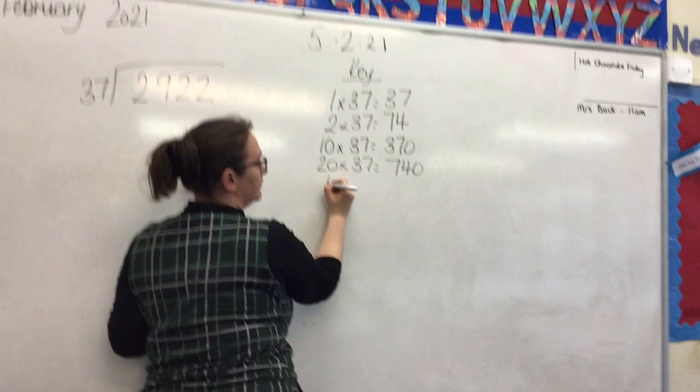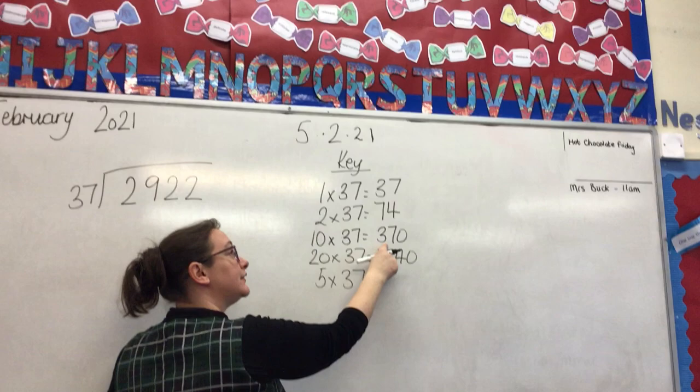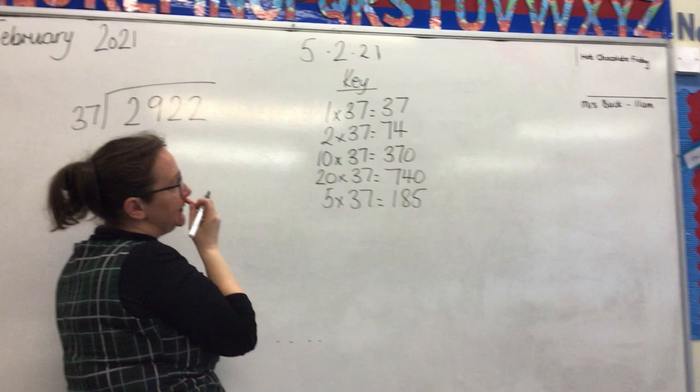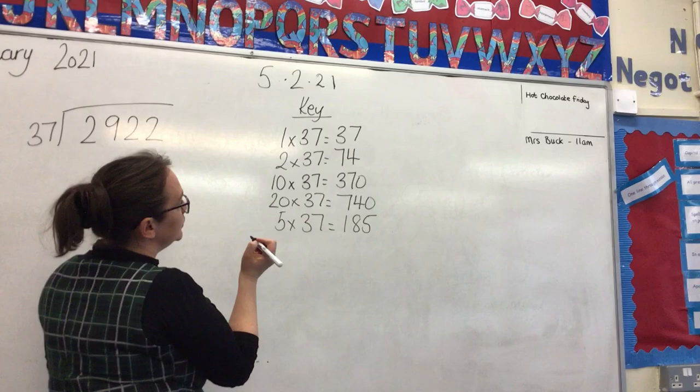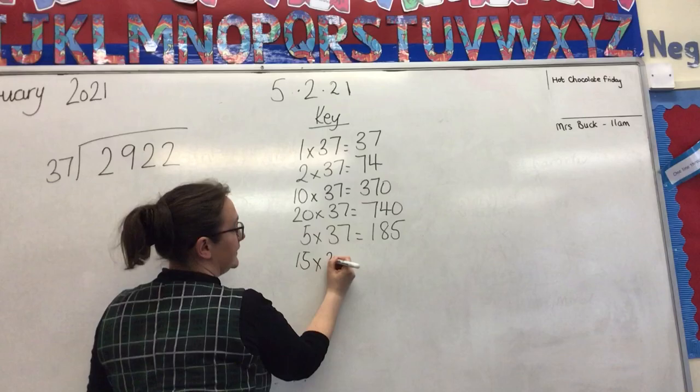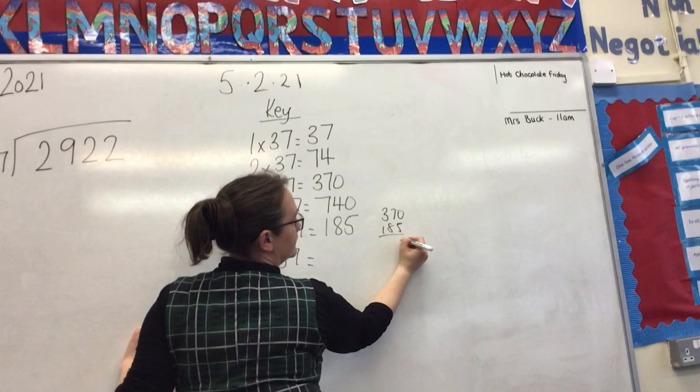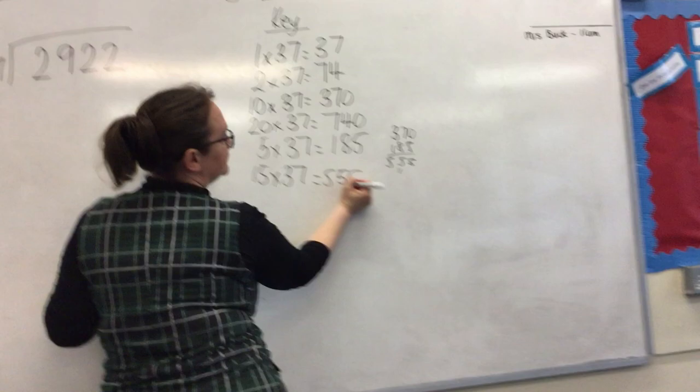We could do 5 times 37 because we can halve this number, so that's 185. Where else shall we go? We could add those two together and do 15 times 37, so that would be 555.